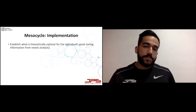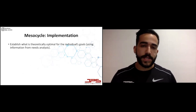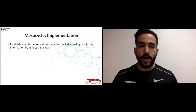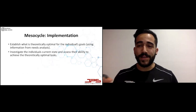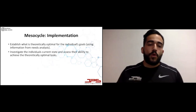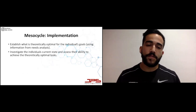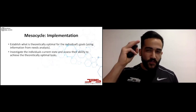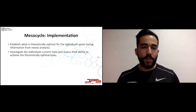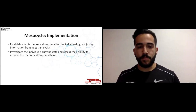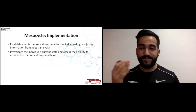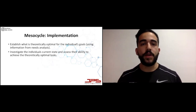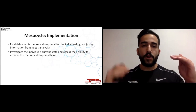When it comes to implementing the mesocycle, we need to establish what is theoretically optimal for the individual's goals and balance that with what is practically optimal — what the client can practically achieve. I investigate the individual's current state and assess their ability to achieve theoretically optimal tasks. When programming, I'll first shoot for what I think is theoretically optimal, then fine-tune based on what I think the client can actually do. If I feel they can't sustain it or there are too many risks, I start cutting away until I reach a good balance between theoretically and practically optimal.